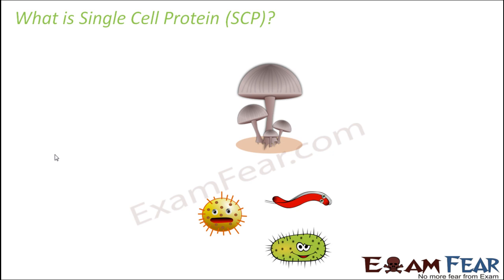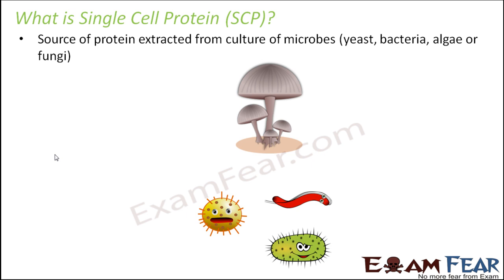So what is single cell protein or SCP? It is a source of protein extracted from culture of microbes. Microorganisms like bacteria, yeast, fungi, and algae are also used as a source of food. People have started accepting them as a source of food very easily. For example, most human beings now eat mushroom. In a similar way, many other microorganisms can provide a lot of proteins, and the yield of microbes is also very high compared to other plants or animals. So microbes can also act as a source of food, and this is known as single cell protein.